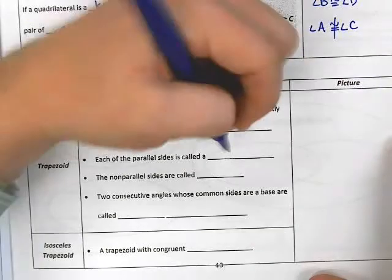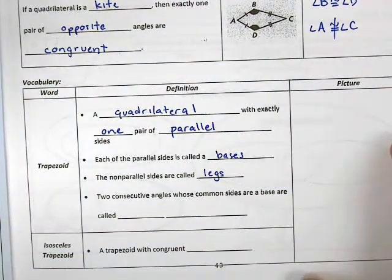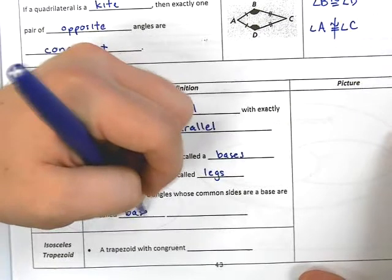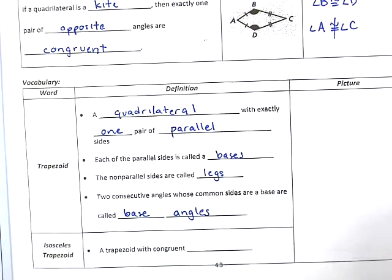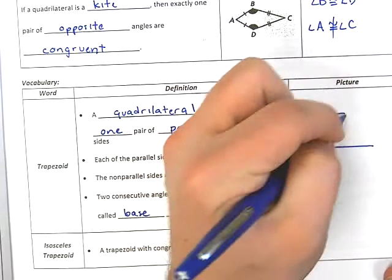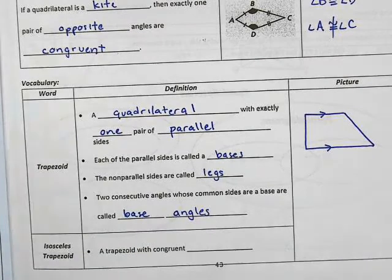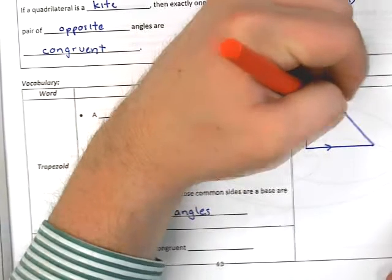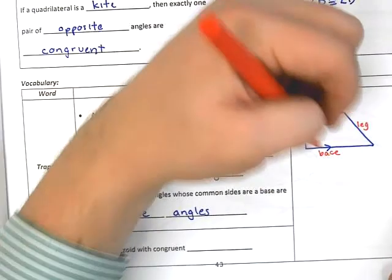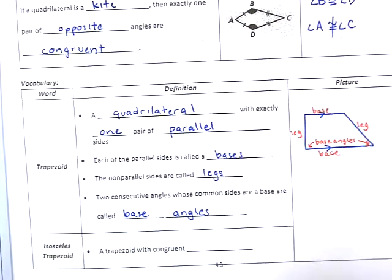Now those parallel sides, we call them bases. And the non-parallel sides, we call legs. And we call consecutive angles which share a side, base angles. So let me be a little more clear on that, because I don't think I did a great job. If I draw a picture like this, I can say this is parallel to this. And I call this a base, and this a base. I call this a leg, I call this a leg. And what I have to do is I have to now say, for base angles, they have to share a base.